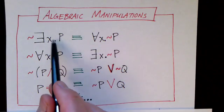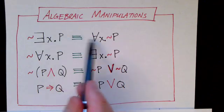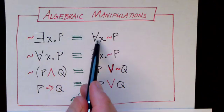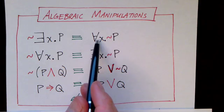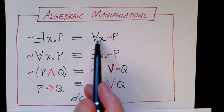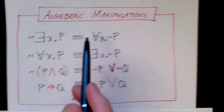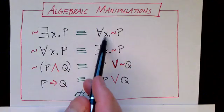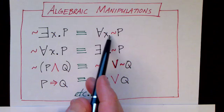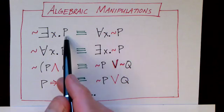When we have a formula in one of these forms, we can rewrite it in the other form, and the formula maintains its truth. If it's true, it stays true. If it's false, it stays false.